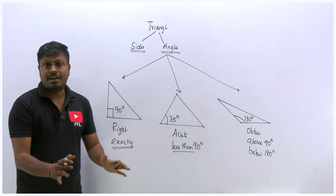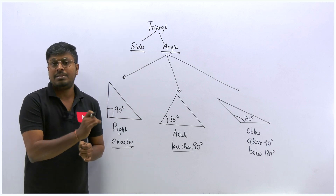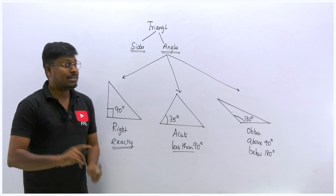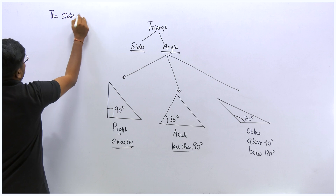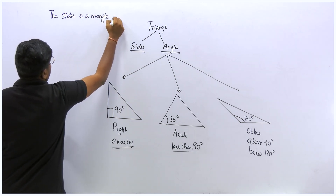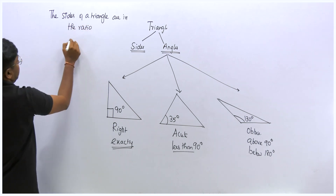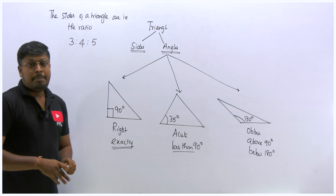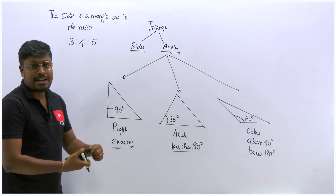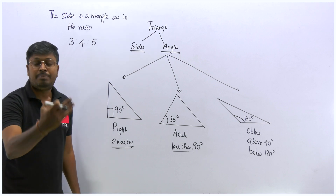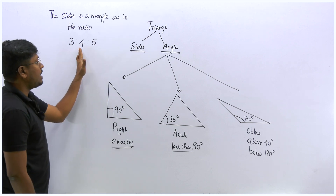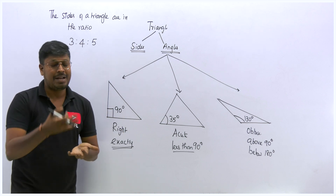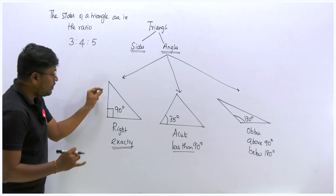Everyone knows these types, but here is one important note that many students forget for competitive exams. In exams, they will give you sides in a ratio and ask what type of triangle is formed. For example: the sides of a triangle are in the ratio 3:4:5. We need to find, using those sides, whether the triangle formed is acute, obtuse, or a right angle triangle.